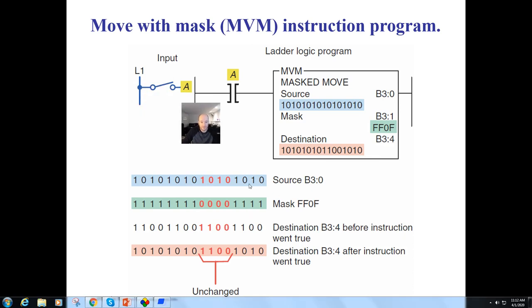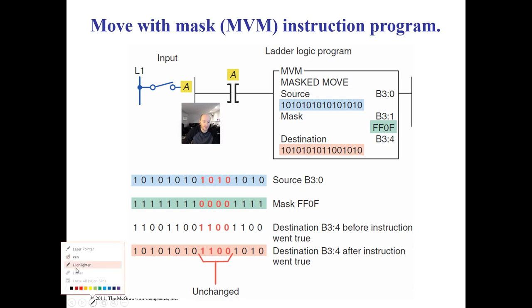And this is how it works. Basically, here's your B3. You have a bunch of inputs in there. Then you have a masked word. And this is being represented in a hexadecimal number. So four ones, four zeros, and the rest are ones. So basically, anywhere you have a one in your mask, that data will be transferred down. So if I have a zero here, it will filter down. I have a one here, so this one will get transferred down. This is what it was before it went true. This is what it is now that it does go true.